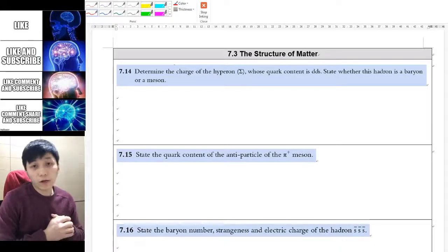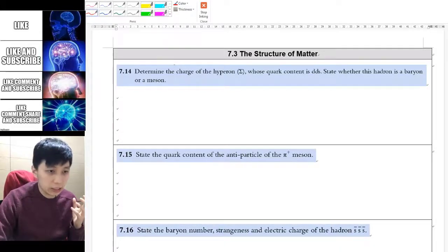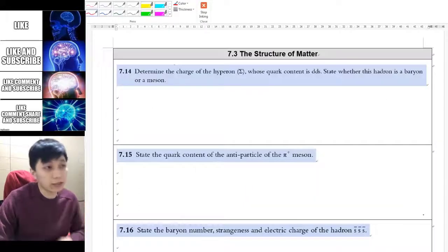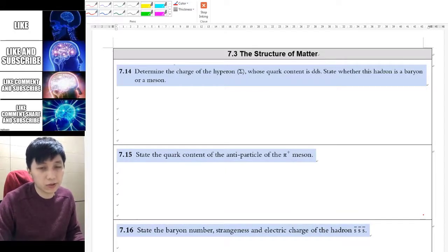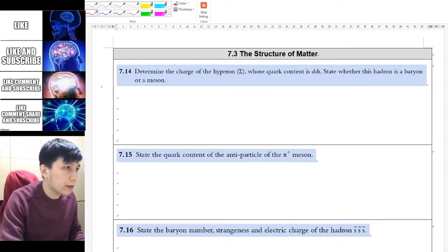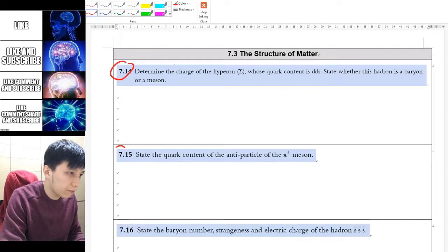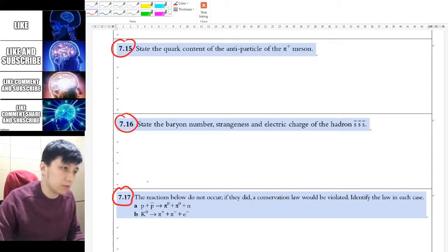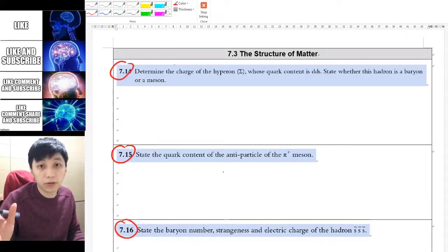Hi, so in the last video we talked about how to look up the charge and the baryon number for each quark on the data table. This time let's try to work on some exercises together. We'll be going through examples 14, 15, 16, and also 17. Please try it yourself and pause the video now.